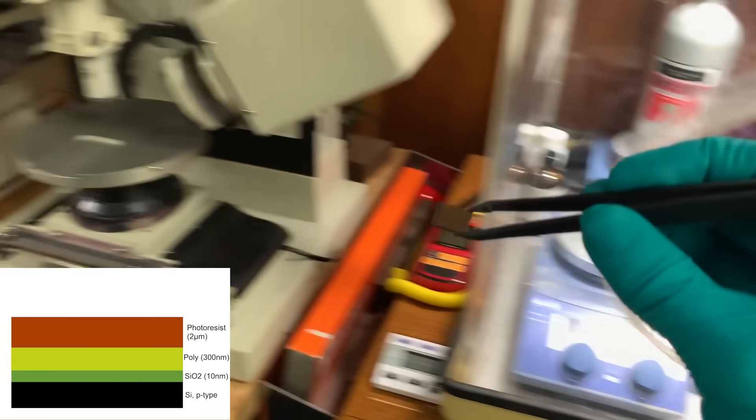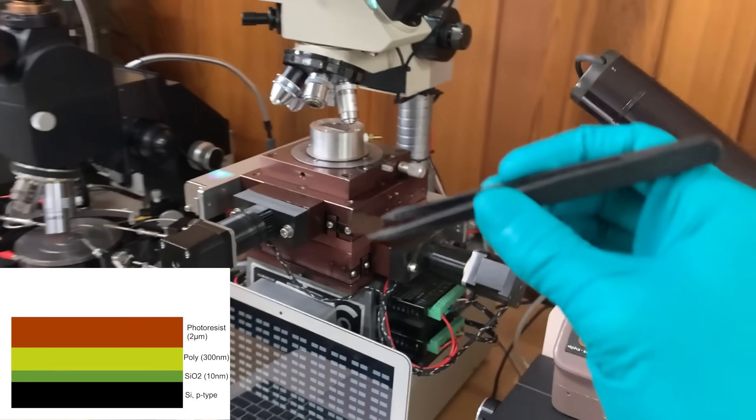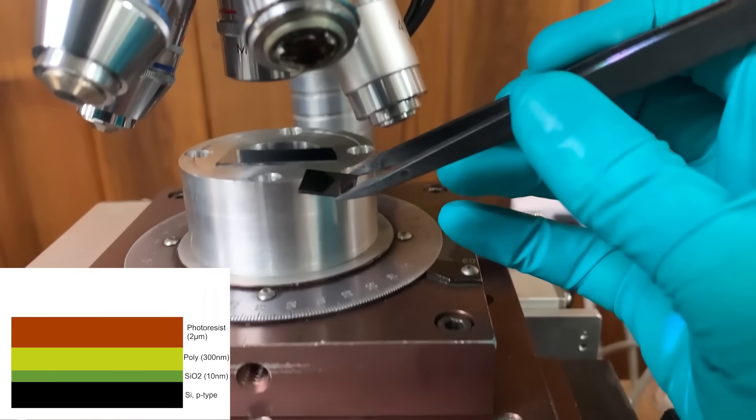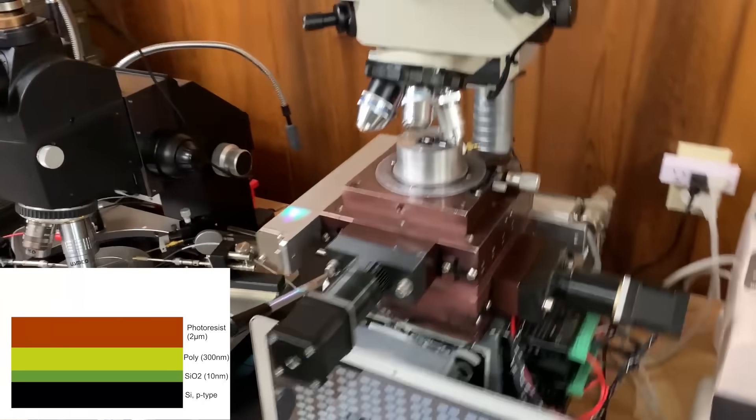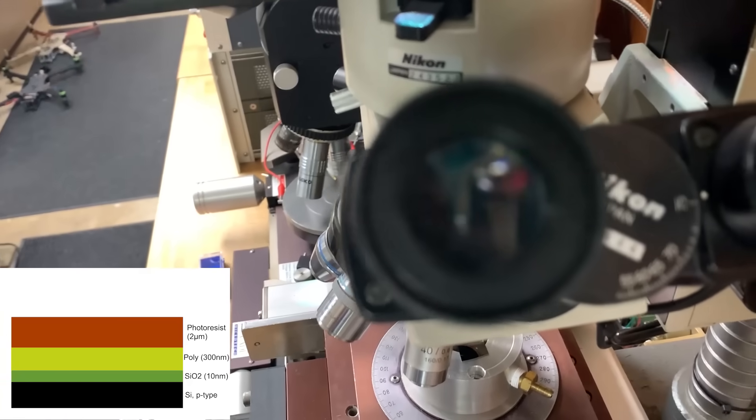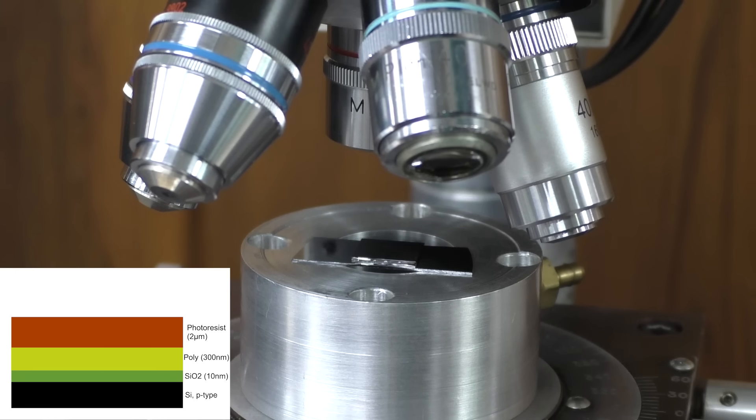Then it's off to the home-built maskless photolithography stepper for exposure. The basic idea is that we load up an image on this laptop that we want to project onto the chip. Then there's a standard DLP projector and some optics that shoot that down and reduce it onto the wafer. I have a whole video on this tool, so I recommend checking that out.